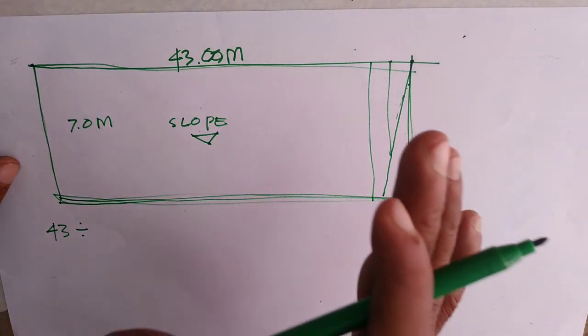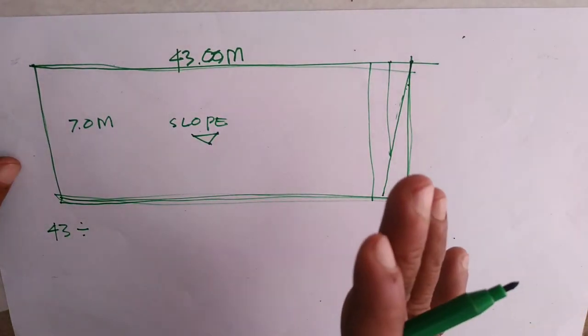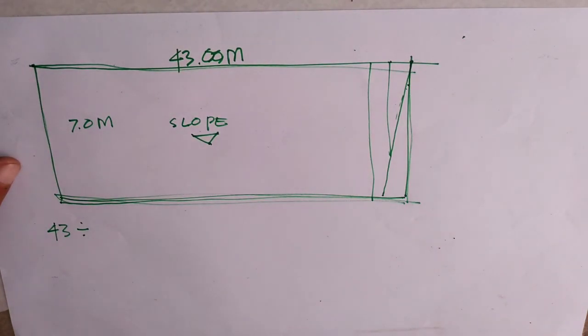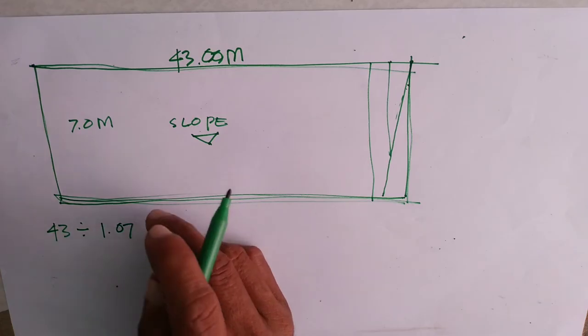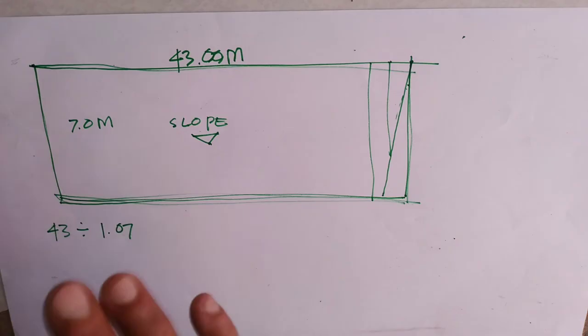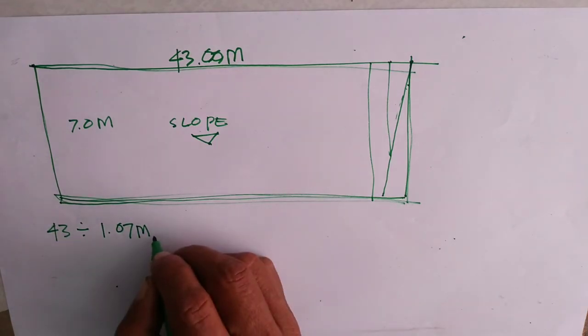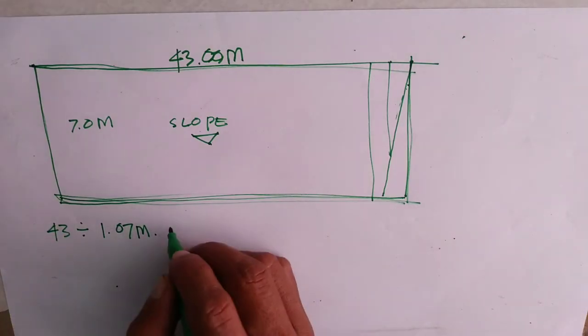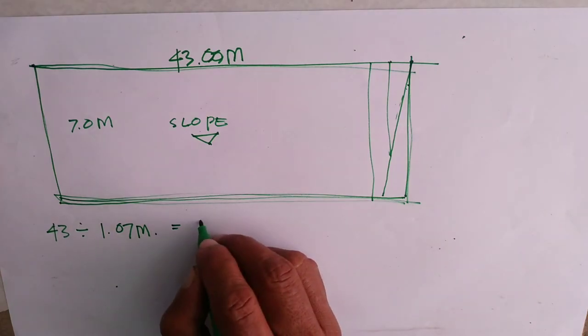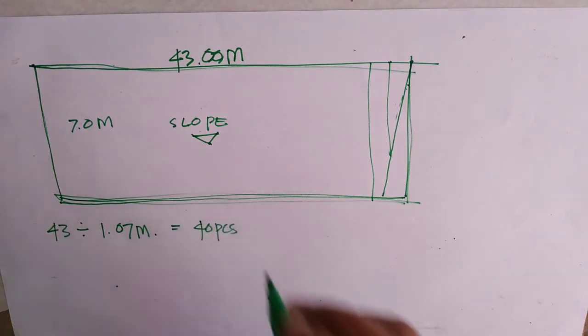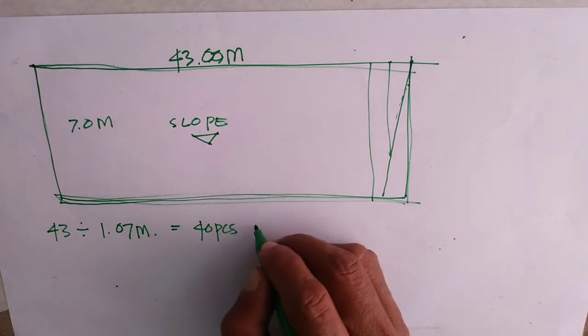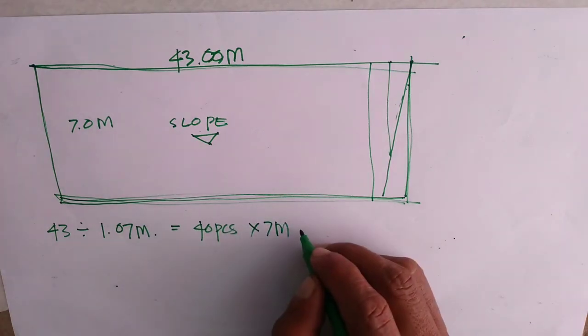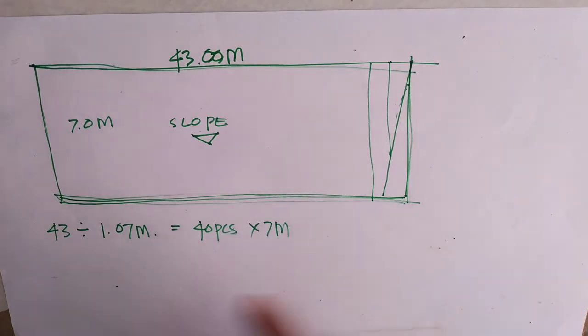Dapat alam nyo po yung matagal ko na itong sinasabi sa inyo na dito sa mga plug ko na kailangan alam nyo yung effective coverage. Dito, ginamit natin yung pinagkamalapad. 1.07 meters. Ayan. So, ang kalalabasan nyan, 40 pieces na yero. Riptide, 40 pieces na 7 meters by 7 meters.